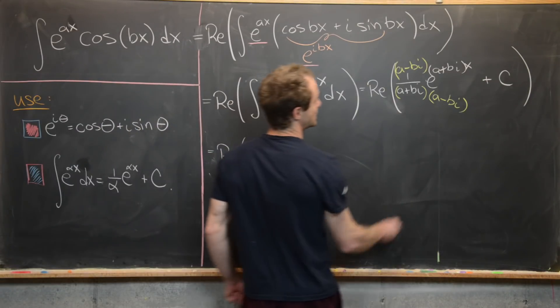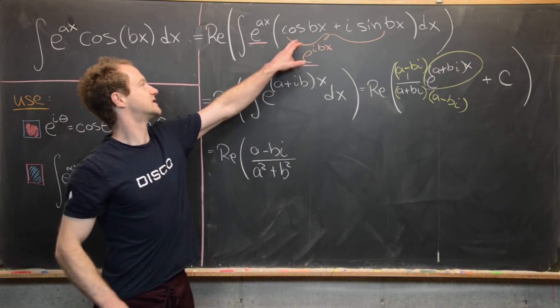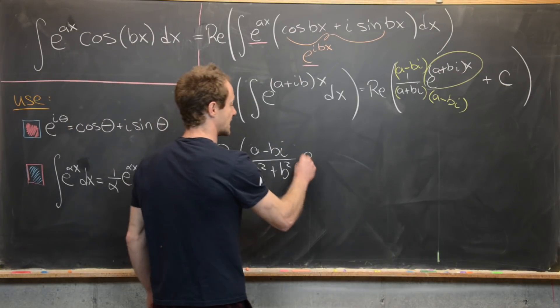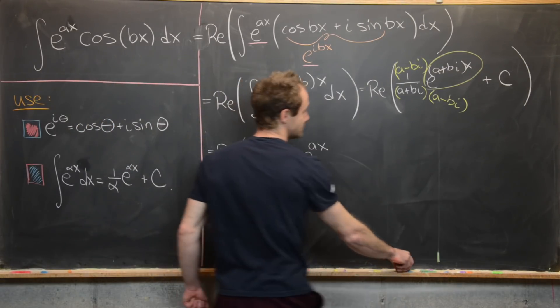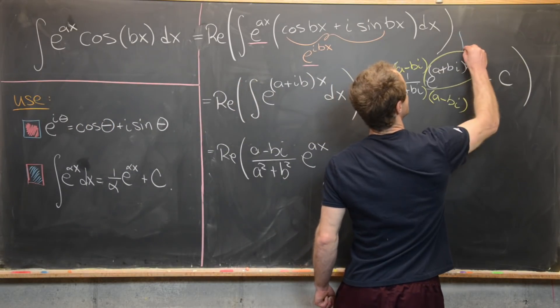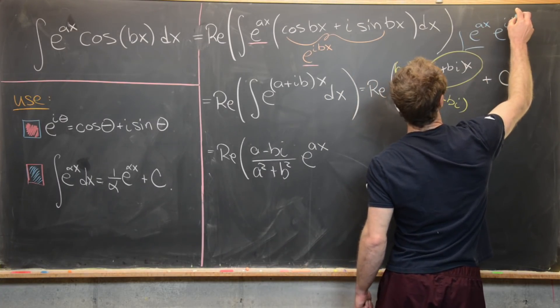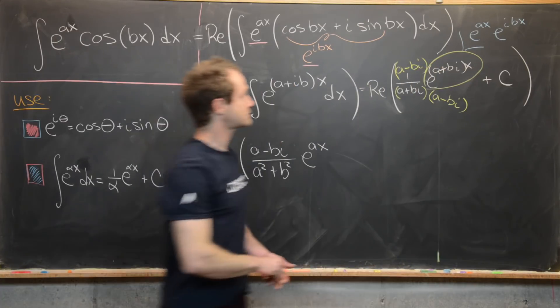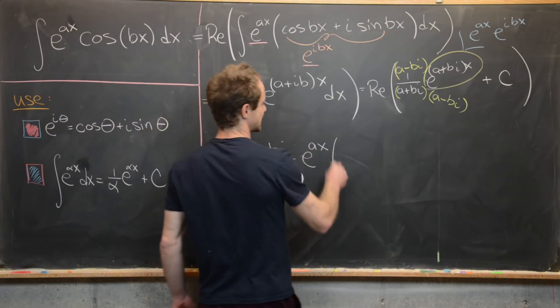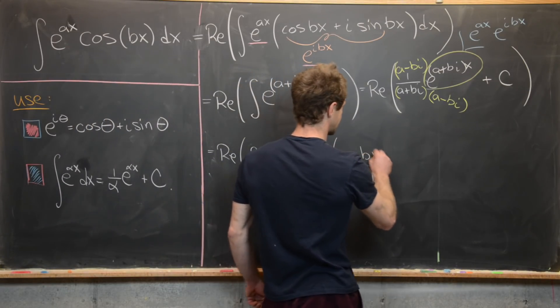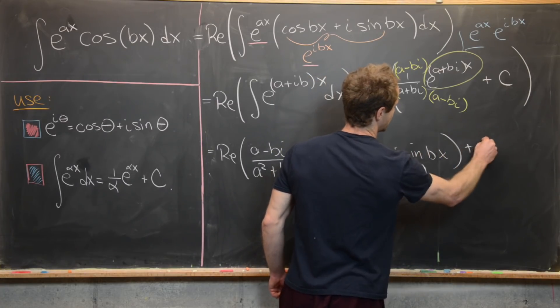Now what I want to do is split this guy up using our exponential rules that we use to combine this together. So first I'll bring an e^(ax) out. So just to reiterate what I'm doing here, I'm taking this guy right here and I wrote it as e^(ax) times e^(ibx). And now I'll re-expand that e^(ibx). So notice that's going to give me the same thing up here. So I got cos(bx) + i·sin(bx) and then plus my constant.